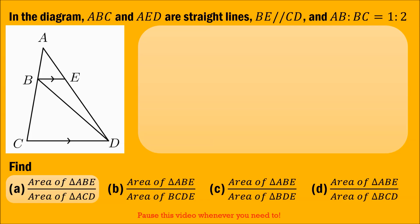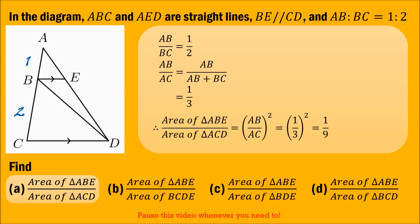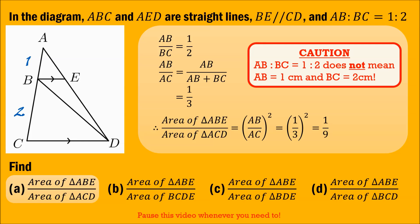Now that we have proven similarity, we can find the ratio of the areas. Since AB over BC is 1 over 2, we find AB over AC, where AC is the sum of AB and BC, giving a ratio of 1 to 3. Therefore, the area of triangle ABE over the area of triangle ACD is the square of AB over AC, which gives us 1 over 9. Caution: AB to BC equals 1 to 2 does not mean AB is 1cm and BC is 2cm — what is given is the ratio, not the actual length.